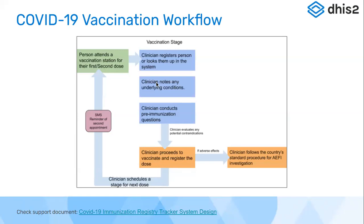The clinician notes any underlying conditions the person already has, then completes a pre-immunization section capturing past COVID-19 history if applicable. Once the pre-immunization section is filled, the clinician proceeds with vaccination and registers the dose. If during the observation period the person reports any adverse events, a note is made and the details are captured. The next date for the second dose is then defined based on the vaccine candidate being used in-country.